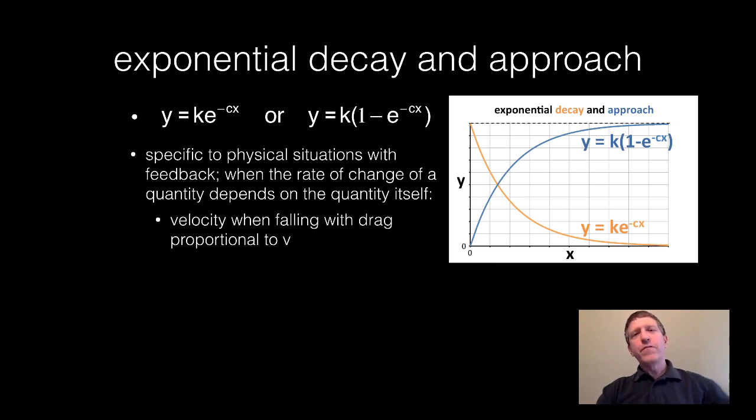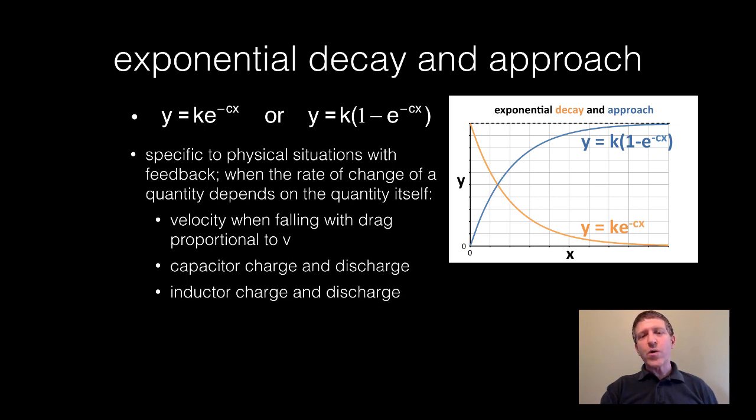One perfect example is velocity. When you're falling through air or through water, you go faster, but then there's more drag force. So that's expressed by these equations. Capacitor charging and discharging, as well as inductor charging and discharging in electricity and magnetism, follow this pattern. And here are some examples. So that's all there is for the types of relationships.